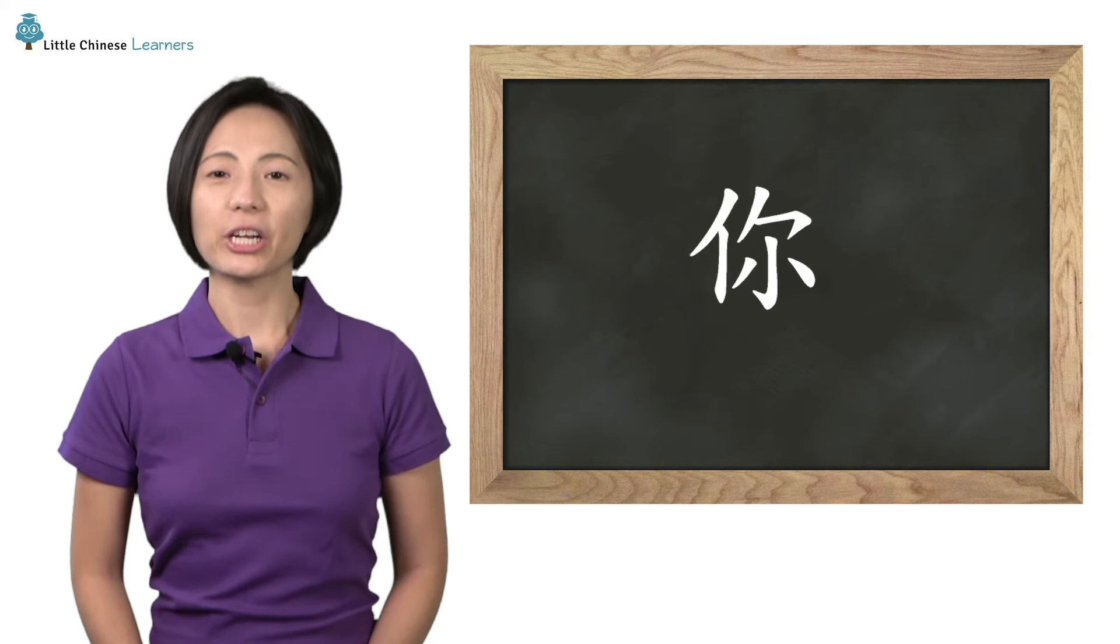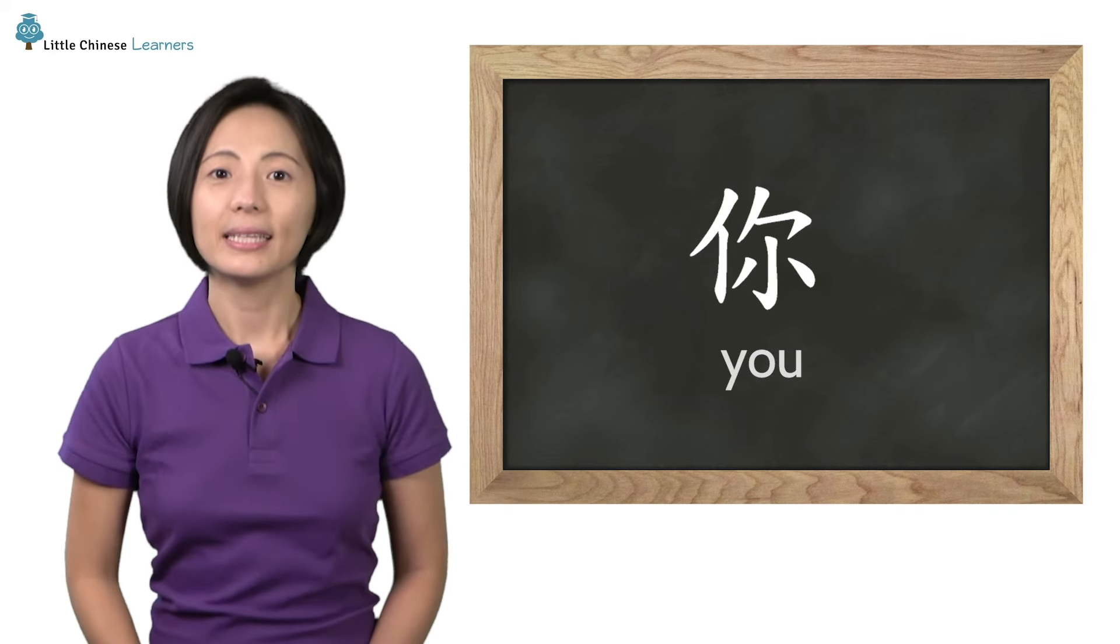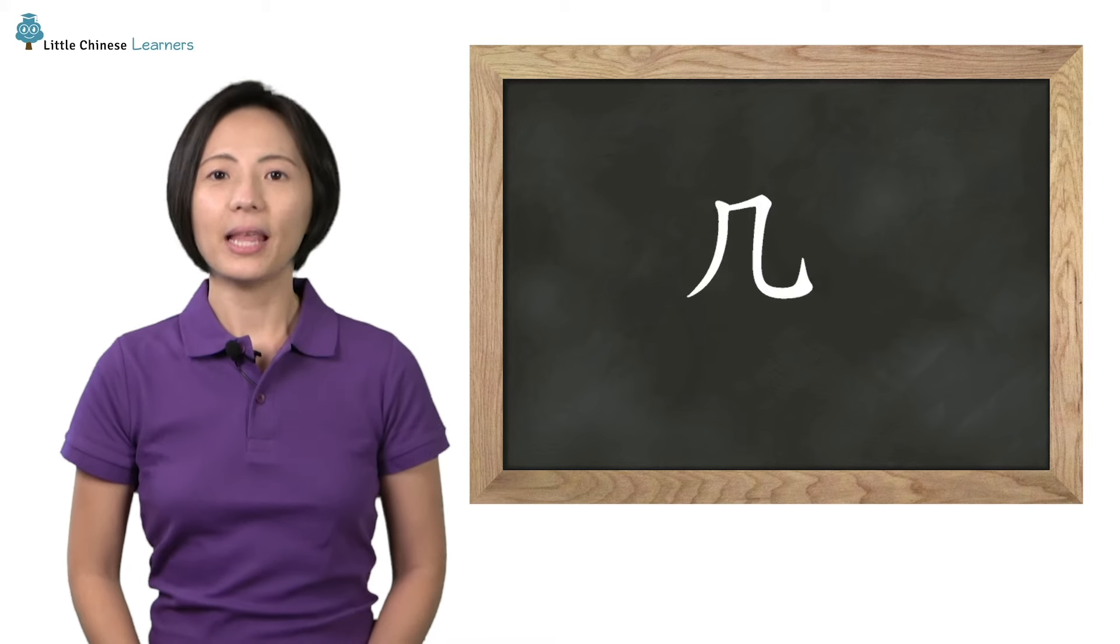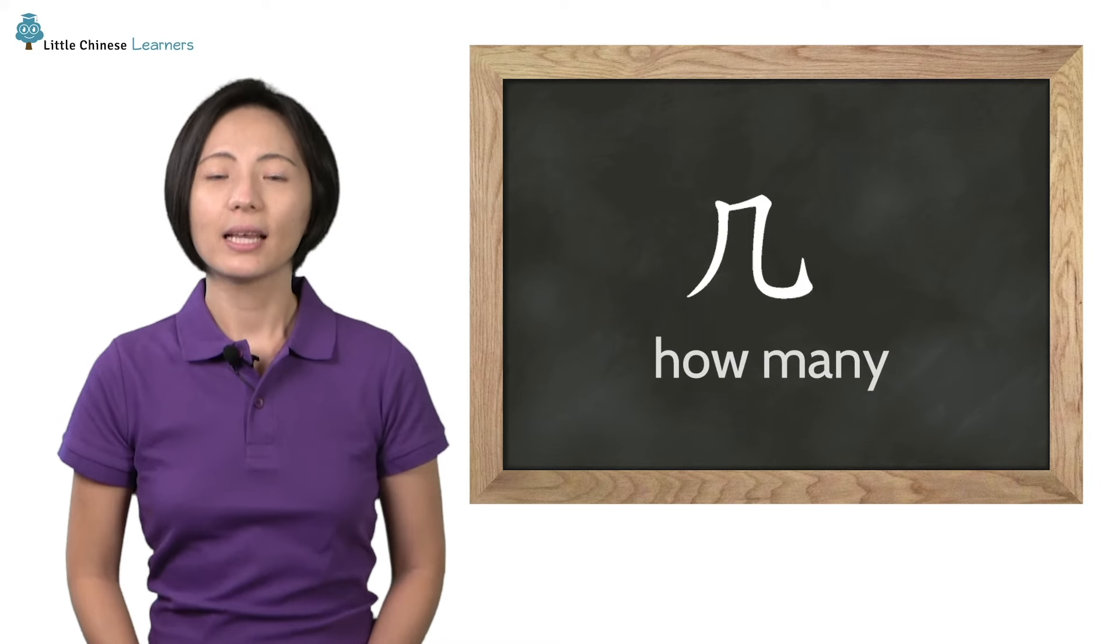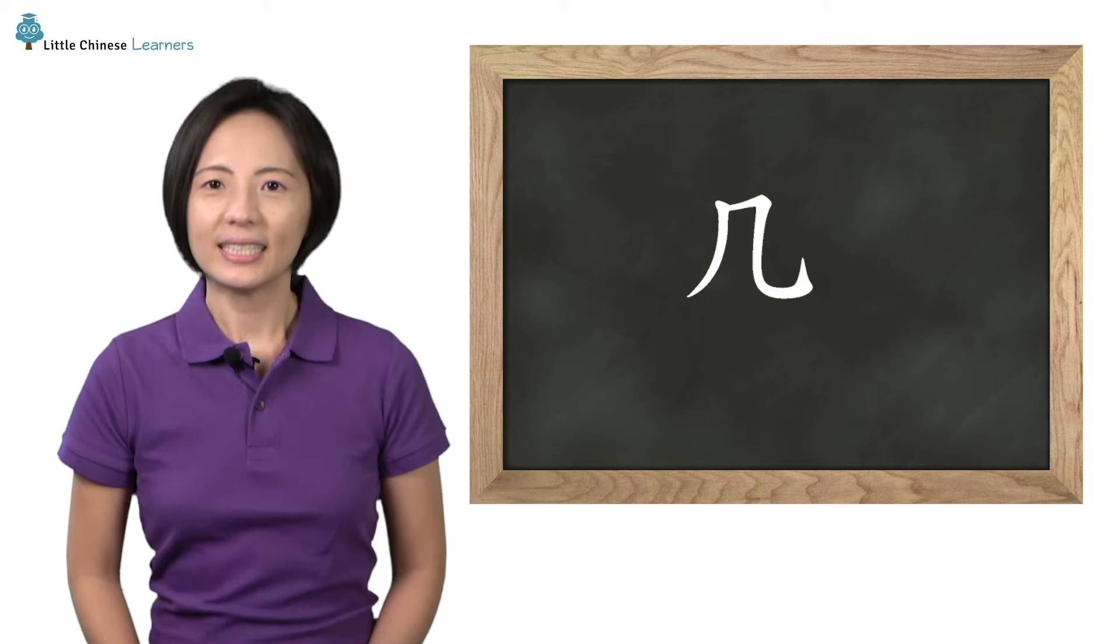The first character is 你. You already know that one, it means you. Next, we have 几, it means how many. 几, 几. Can you try it? Great, 几.